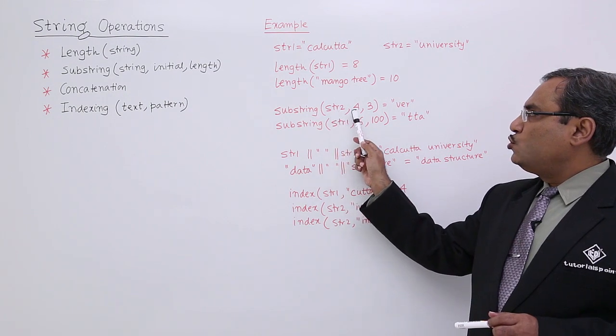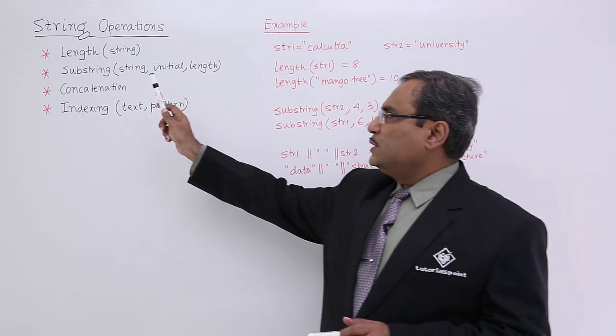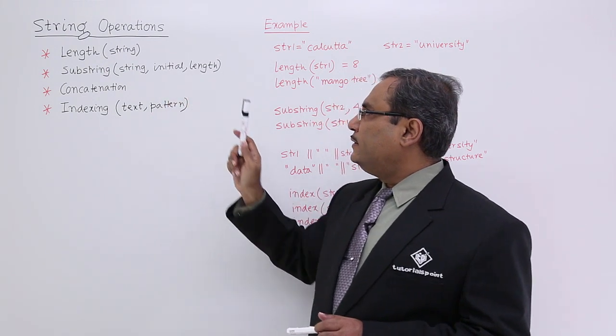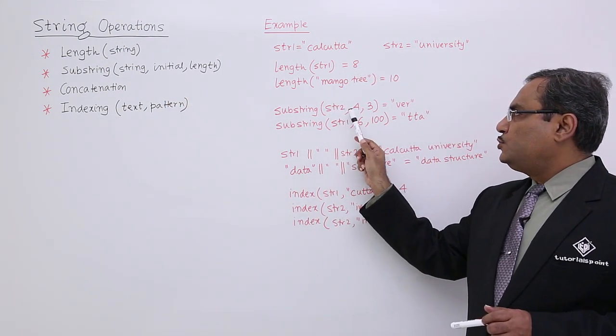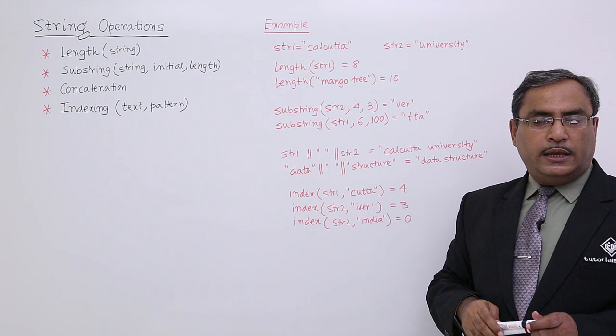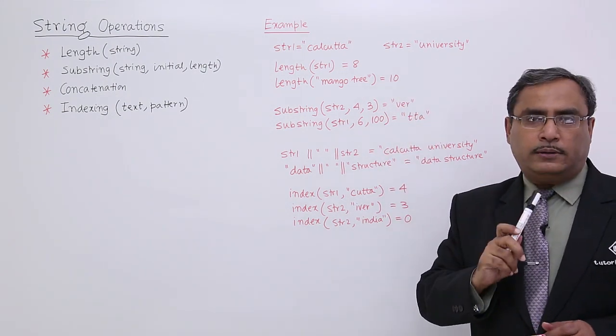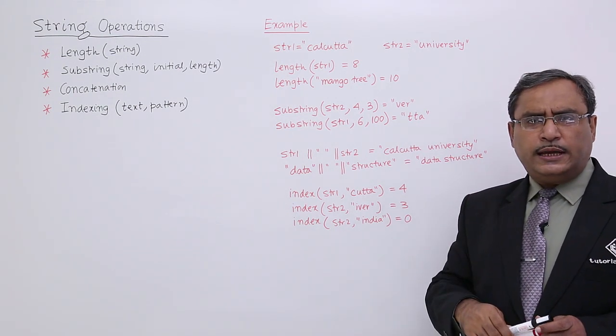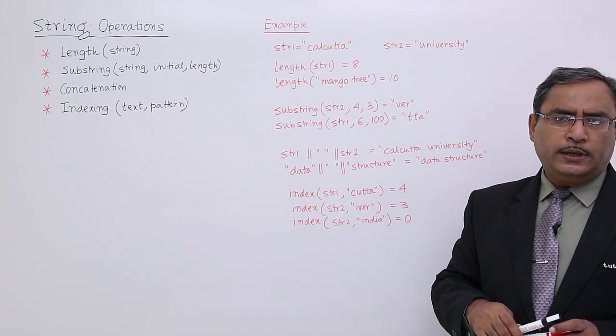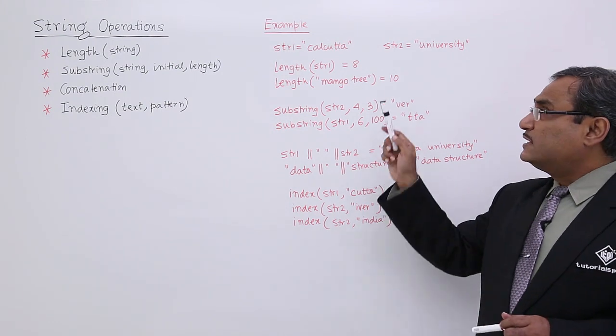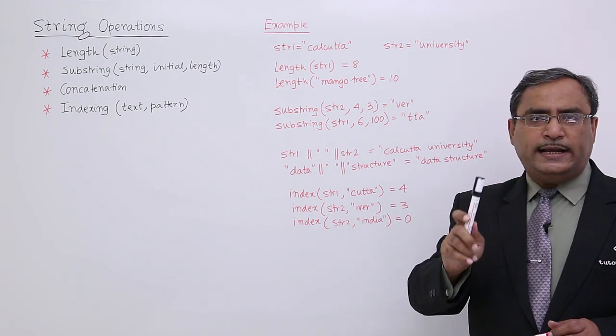Now, substring STR2 comma 4 comma 3. In case of substring, I require the string, then initial, then length. Here we have considered that the first character position number is 1, but in different languages it may not be 1, it may be 0. So it is language dependent. Here we are considering the first character is at position index 1.